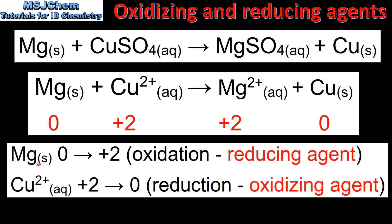Starting with the magnesium, the oxidation state has changed from 0 to +2. That's an increase in oxidation state which is oxidation. A reducing agent is oxidized, so the magnesium is oxidized, therefore it's the reducing agent. Next we look at the copper 2+ ions. The oxidation state changes from +2 to 0. That's a decrease in oxidation state which is reduction. An oxidizing agent is reduced, therefore the copper 2+ ions are the oxidizing agent.